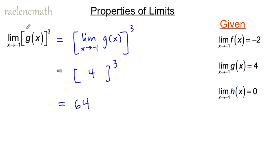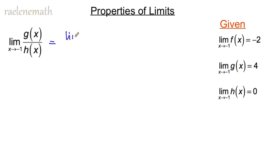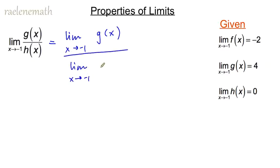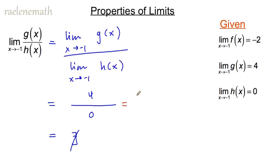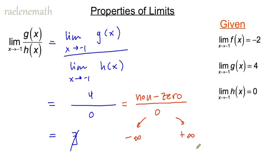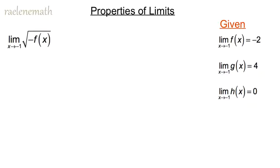In the next case, if we attempt to apply the quotient property, we take the limit of the numerator divided by the limit of the denominator, but the denominator has a value of zero. This gives four over zero, which does not exist. The function g(x)/h(x) has a discontinuity — specifically a vertical asymptote — but without a sign chart or graph we can't determine whether it goes to positive or negative infinity, so the limit does not exist.